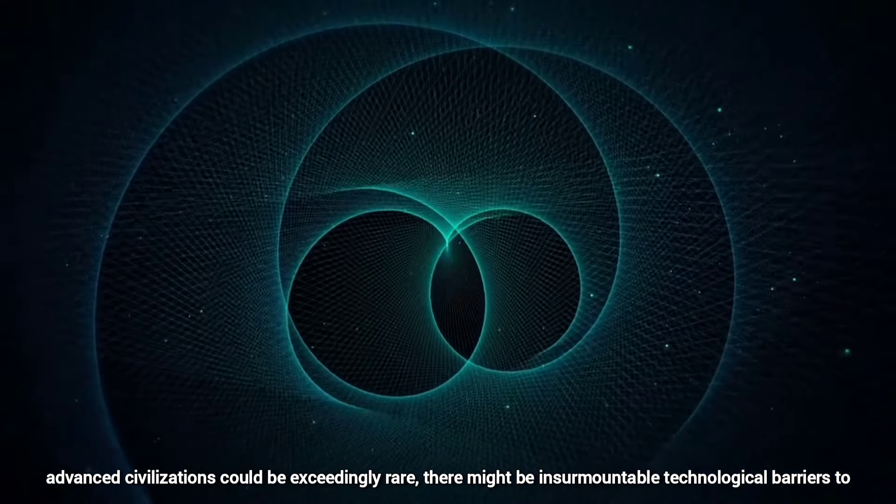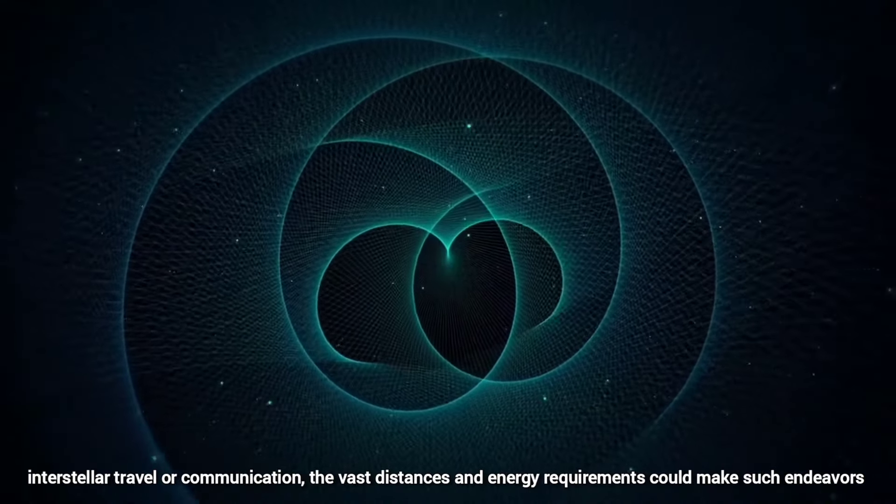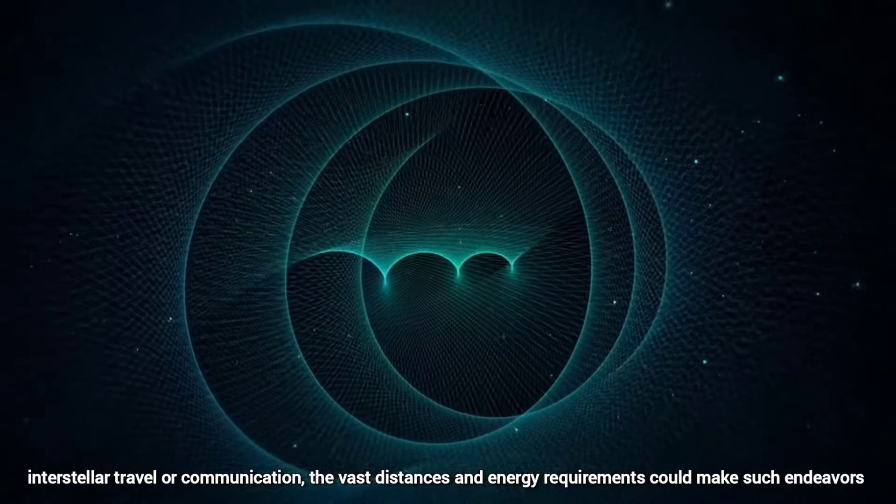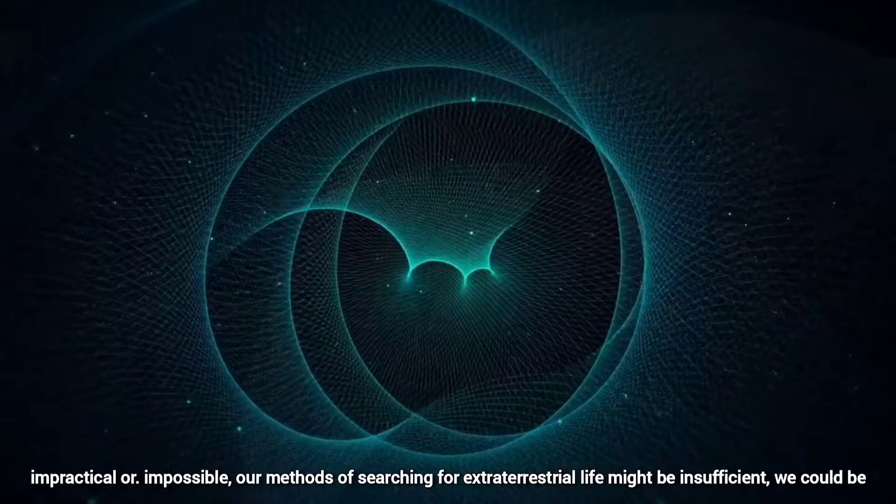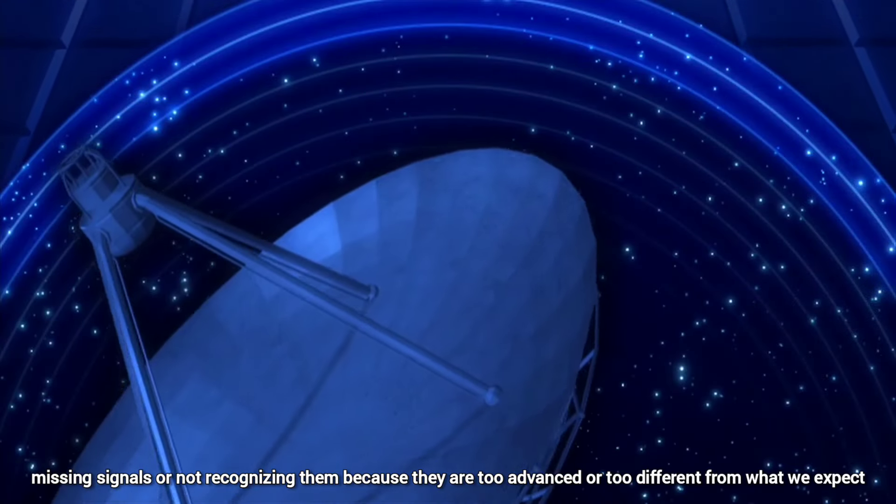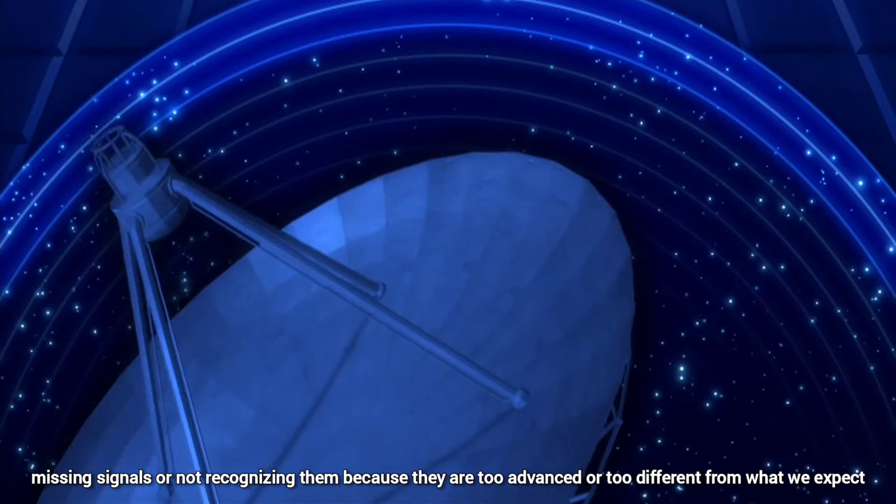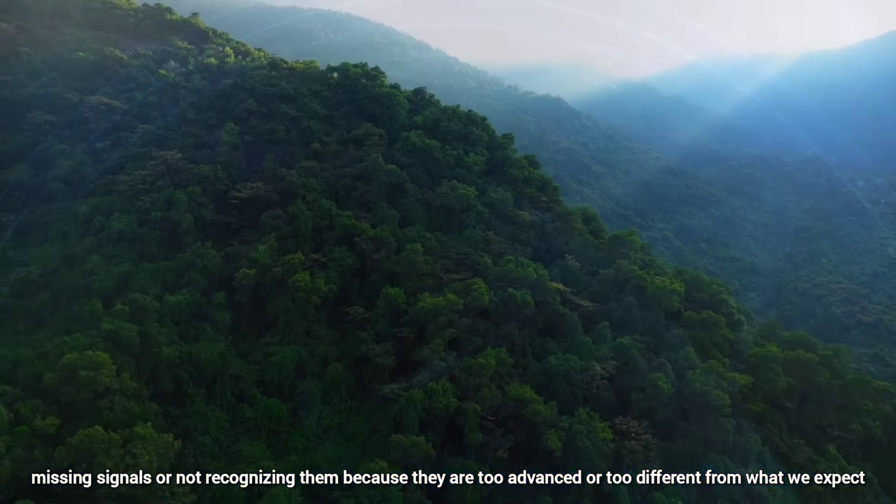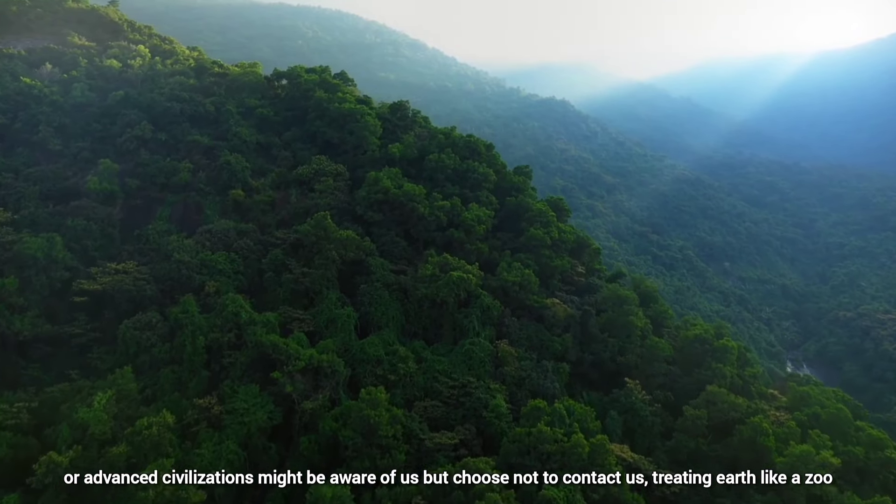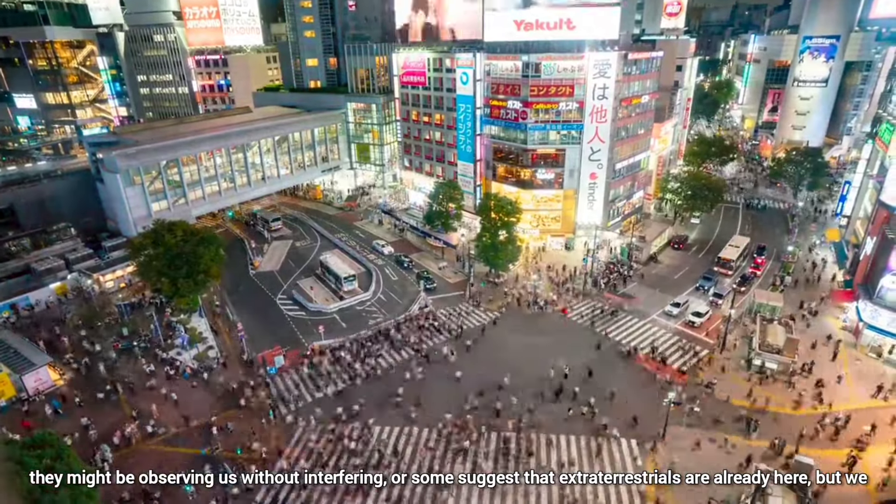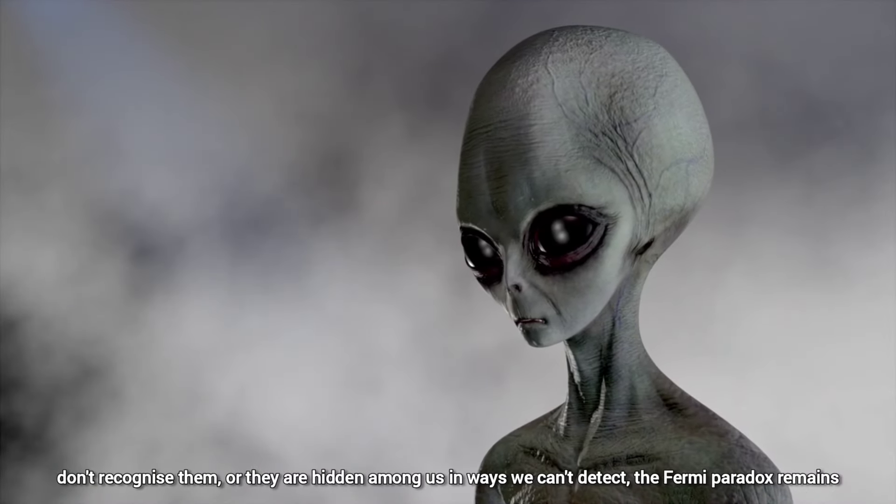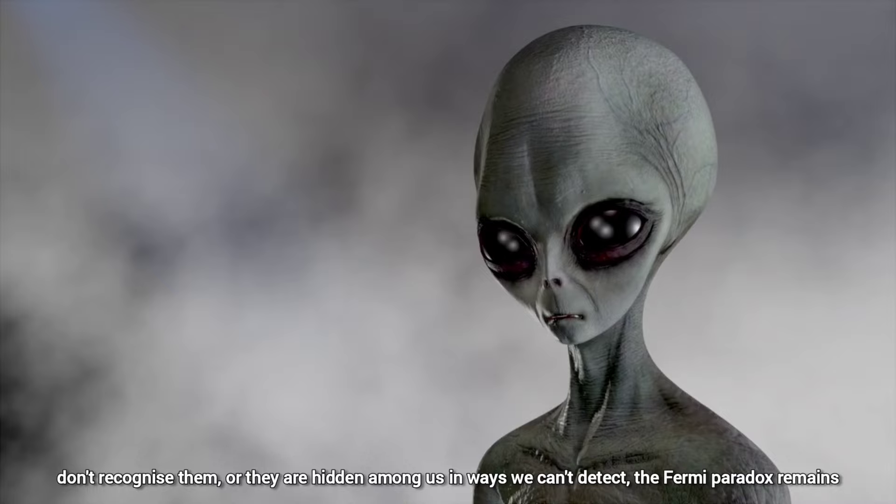There might be insurmountable technological barriers to interstellar travel or communication. The vast distances and energy requirements could make such endeavors impractical or impossible. Our methods of searching for extraterrestrial life might be insufficient. We could be missing signals or not recognizing them because they are too advanced or too different from what we expect. Or advanced civilizations might be aware of us but choose not to contact us, treating Earth like a zoo. They might be observing us without interfering. Or some suggest that extraterrestrials are already here but we don't recognize them, or they are hidden among us in ways we cannot detect.